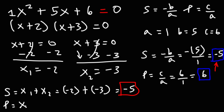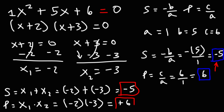As for the product of the two roots, x1 times x2 is negative 2 times negative 3, which gives us positive 6. So those are the two ways you can find the sum and product of the roots of a quadratic equation.